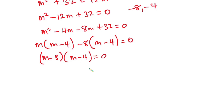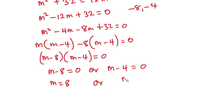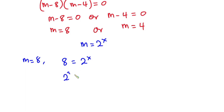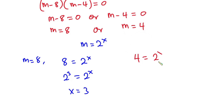So we have the factors (m minus 8) and (m minus 4) equal to zero, giving m equals 8 or m equals 4. Since m equals 2 to the power x, when m equals 8, we have 2 to the power x equals 8, which is 2 to the power 3, so x equals 3. When m equals 4, we have 2 to the power x equals 4, which is 2 squared, so x equals 2.